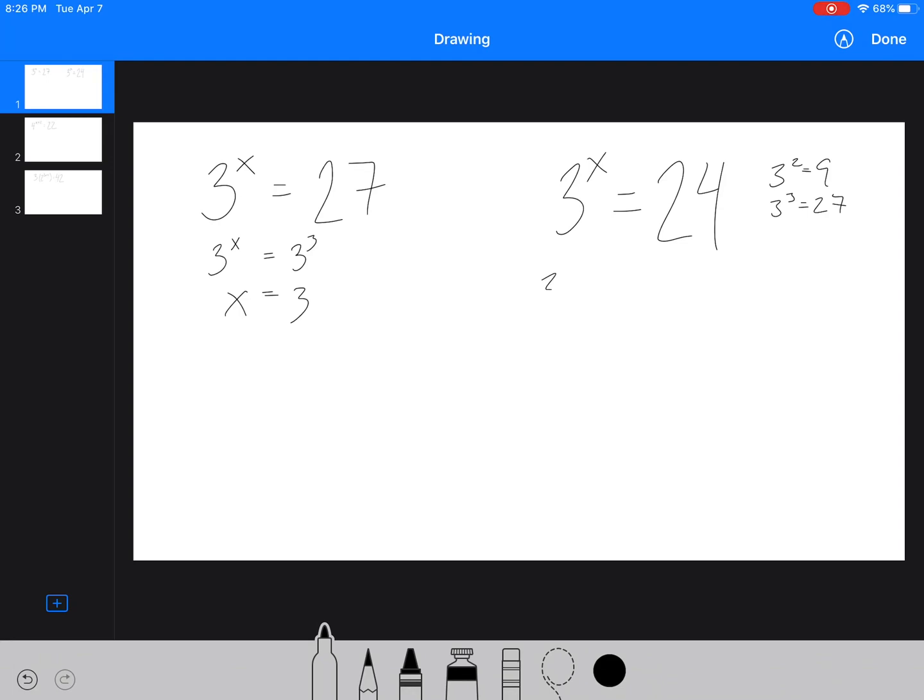3 squared is 9, 3 to the 3 is 27, so we know it's between 9 and 27, so we know that it's between those two. So we'd actually have to try 3 to the 2.7.